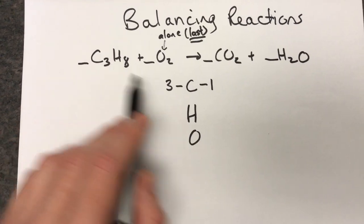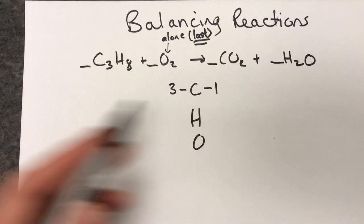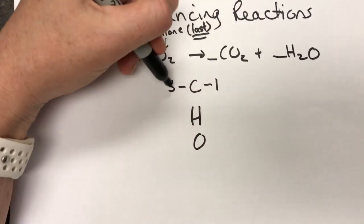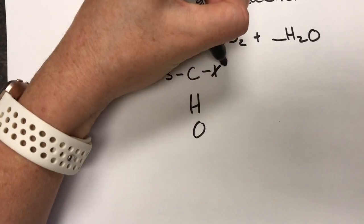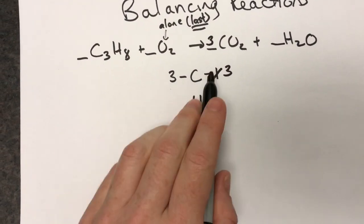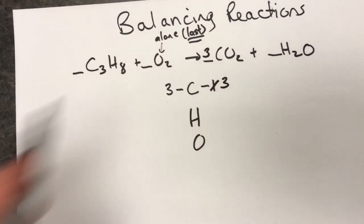So if we have three carbons on the left and one carbon on the right, how I do it is I say 3 divided by 1 is 3 and I put that number there. So I took the big number divided by the smallest number and put the answer there.